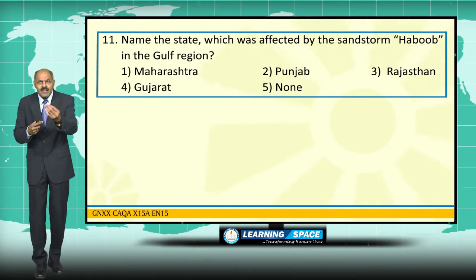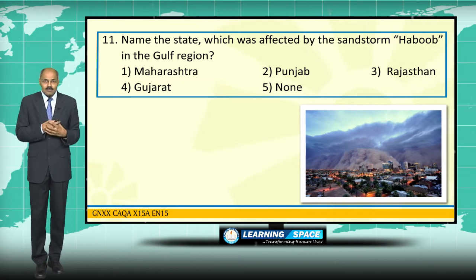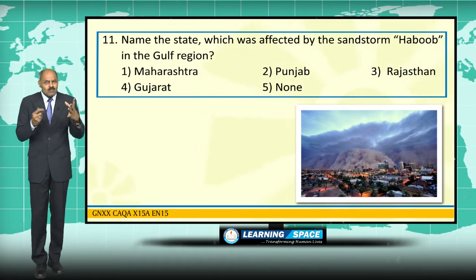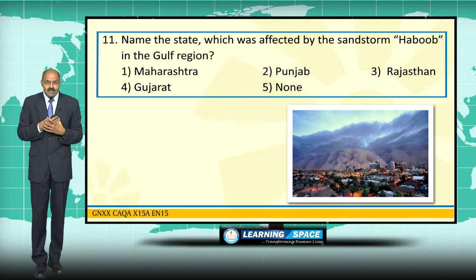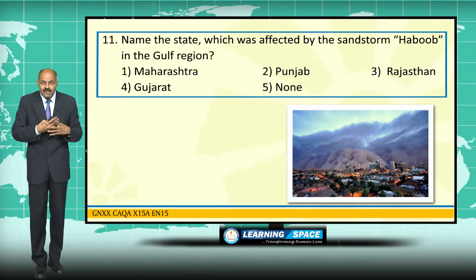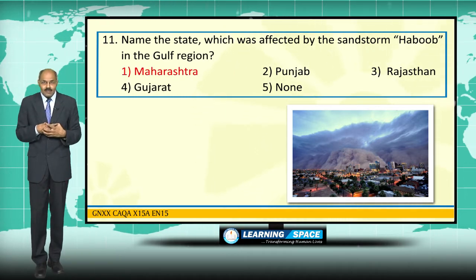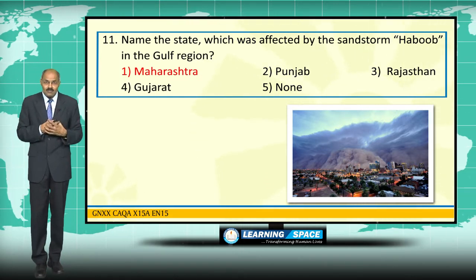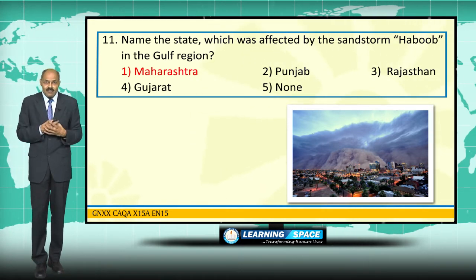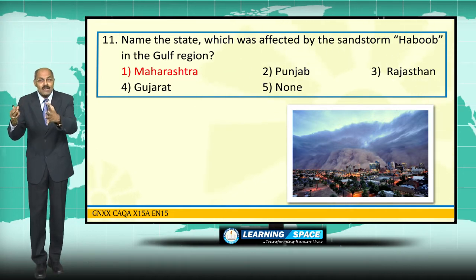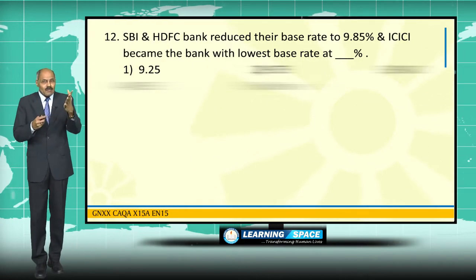The state affected by the sandstorm 'Habub' from the Gulf region is Maharashtra. Habub is an Arabic word meaning severe sandstorm, which is common in Gulf countries, but recently Maharashtra was also affected due to this severe sandstorm from Gulf areas.